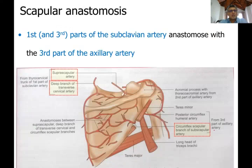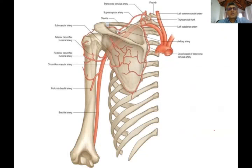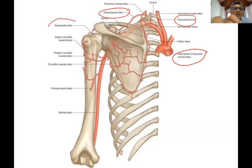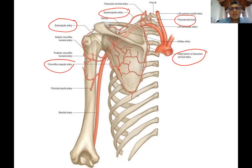This picture shows the scapular anastomosis. Going back to identify the contributing arteries from the subclavian artery side: the deep branch of the transverse cervical artery is in relation to the vertebral border of the scapula, and the suprascapular artery - both coming from the thyrocervical trunk, which is a branch of the first part of the subclavian artery. You will learn these when you study the neck.